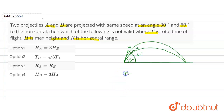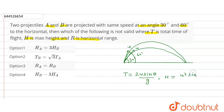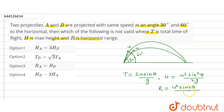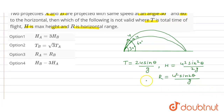We know the time of flight T is equal to 2u sine theta upon g. The maximum height H is equal to u squared sine squared theta upon 2g. And the range R is equal to u squared sine 2 theta upon g. We will use these formulas here.